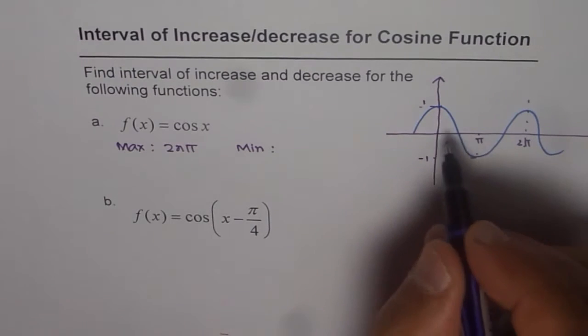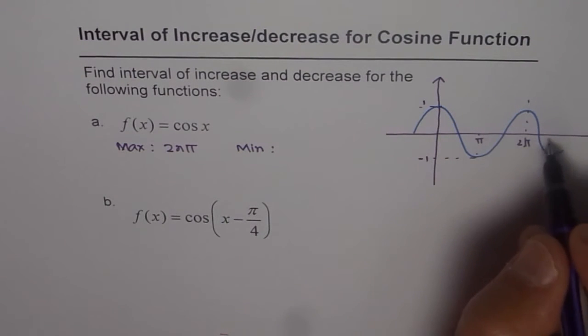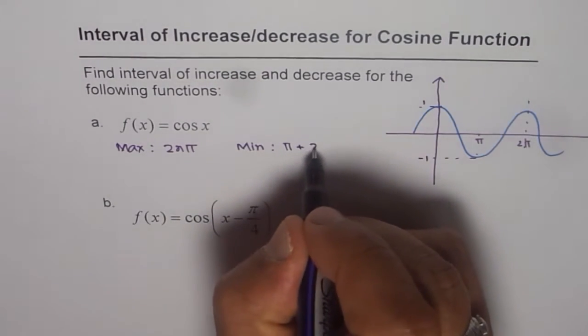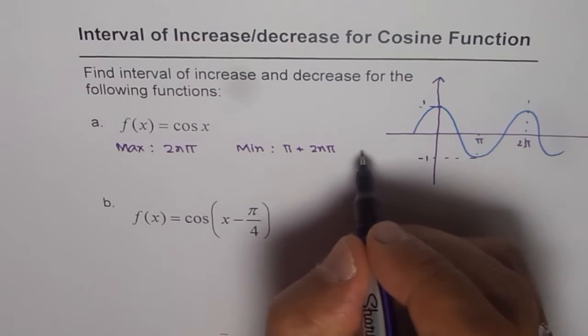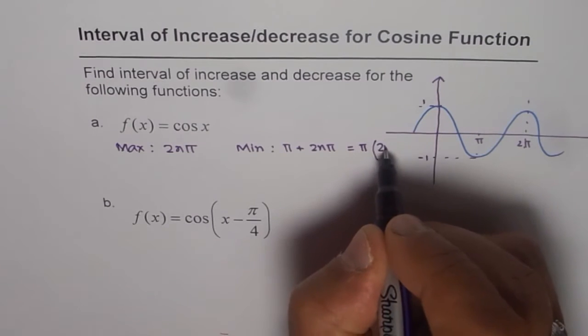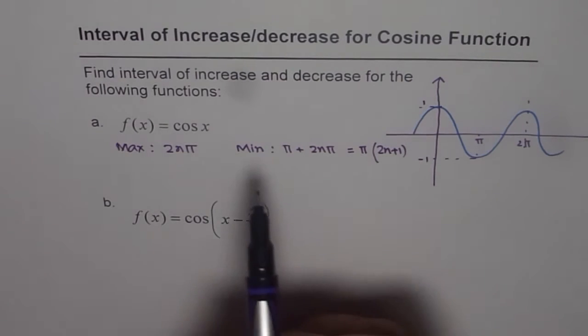We have first minimum, for example, at pi, and then pi plus 2n pi. So we can take pi common, we can say pi times 2n plus 1, or I could write this as, within brackets, 2n plus 1. So that becomes the minimum.